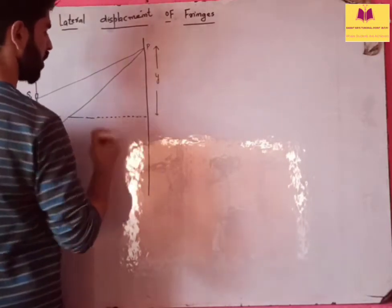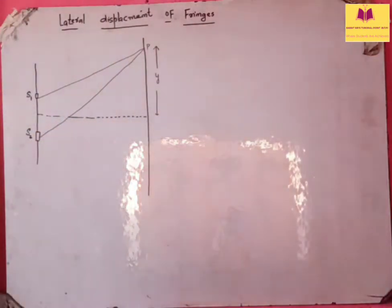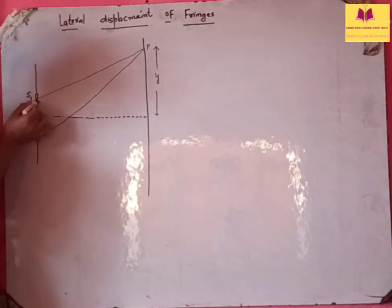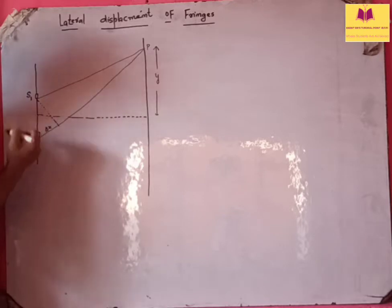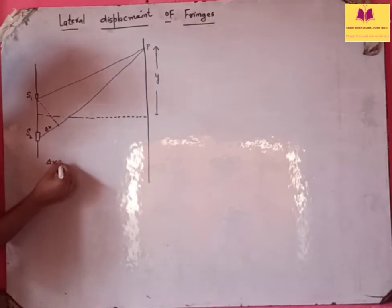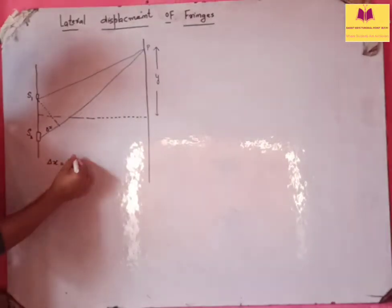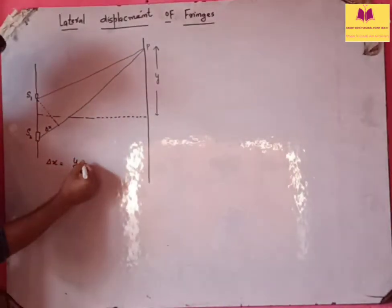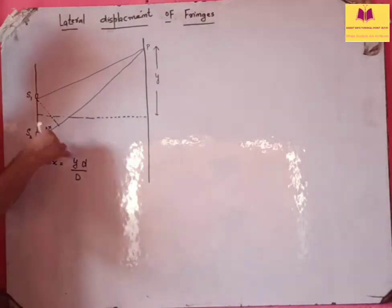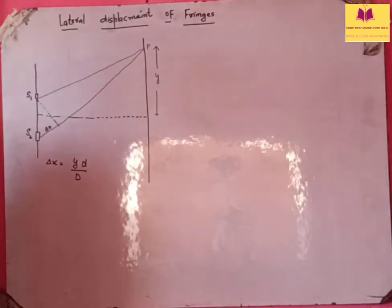This point P is at a distance y from the center. This point P may be the point of constructive superposition or destructive superposition. The path difference between the two light rays, delta x, was calculated as y·d/D — that is, y times d divided by D. This was the path difference between these two rays.